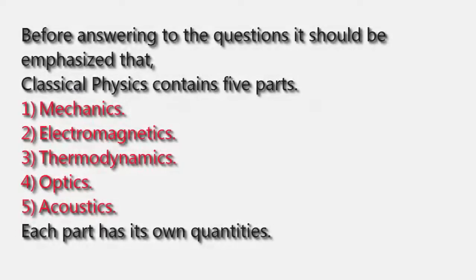Before answering the questions it should be emphasized that classical physics contains five parts: 1. Mechanics, 2. Electromagnetics, 3. Thermodynamics, 4. Optics, 5. Acoustics. Each part has its own quantities.